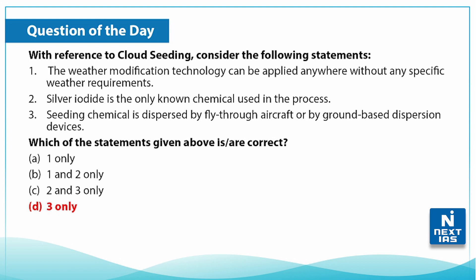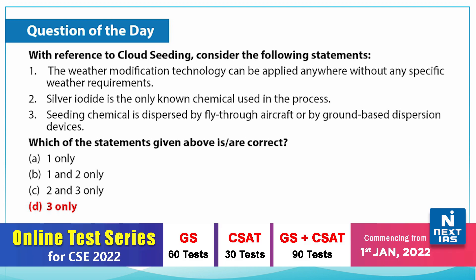The correct answer is option D — that is, only the third statement is correct. The first statement is incorrect because certain atmospheric conditions are required for this procedure. The second statement is also incorrect because apart from silver iodide, many other chemicals can be used, such as solid carbon dioxide. Therefore, only the third statement is correct.